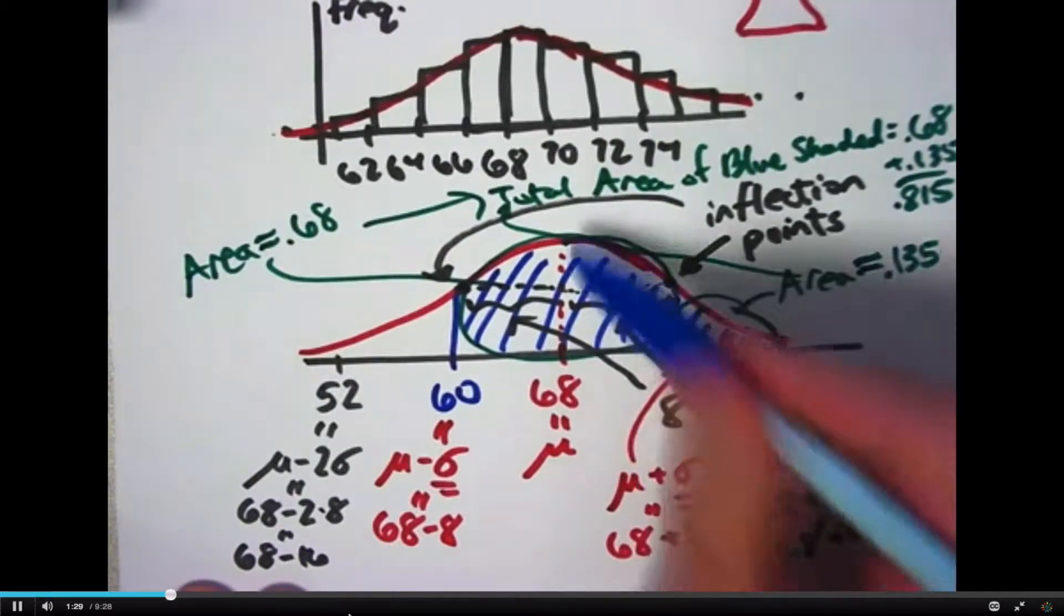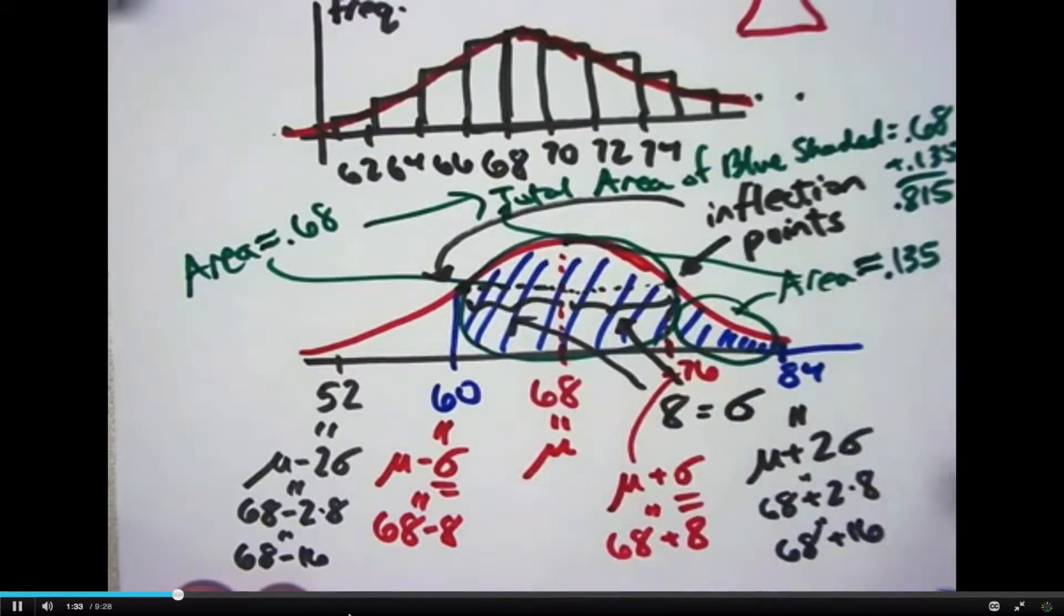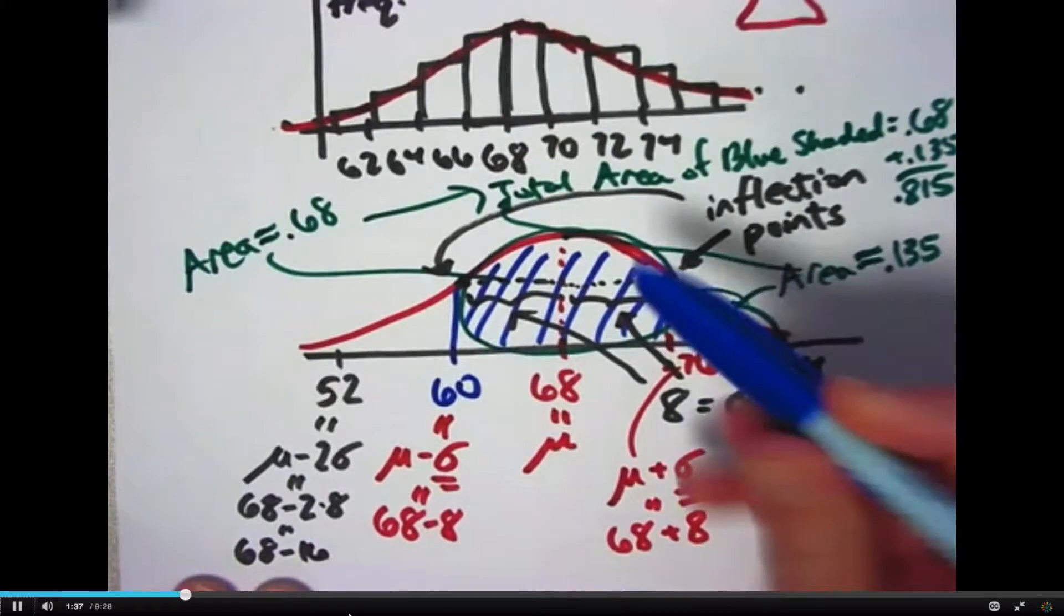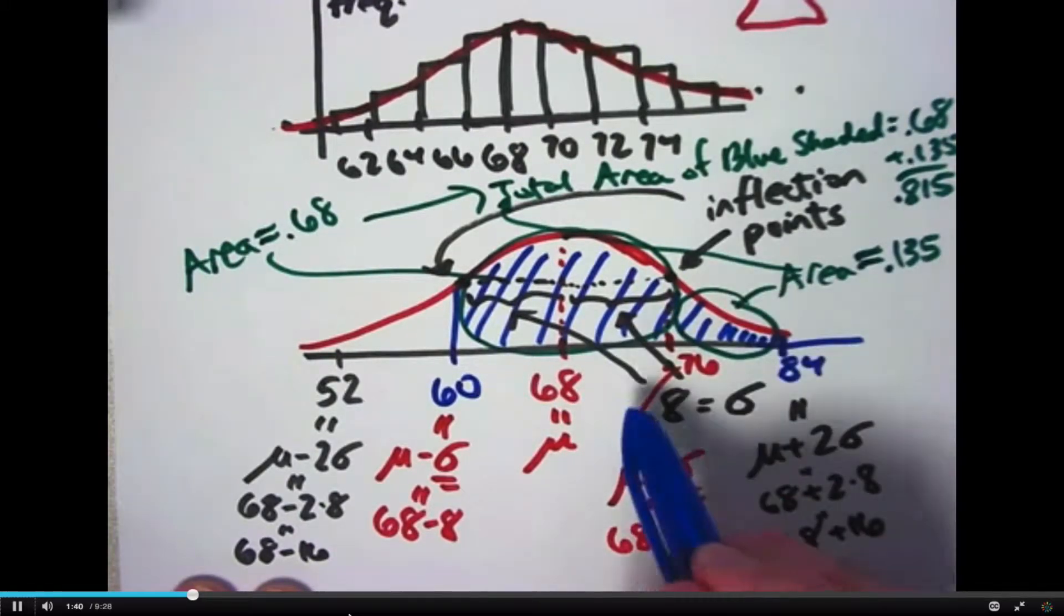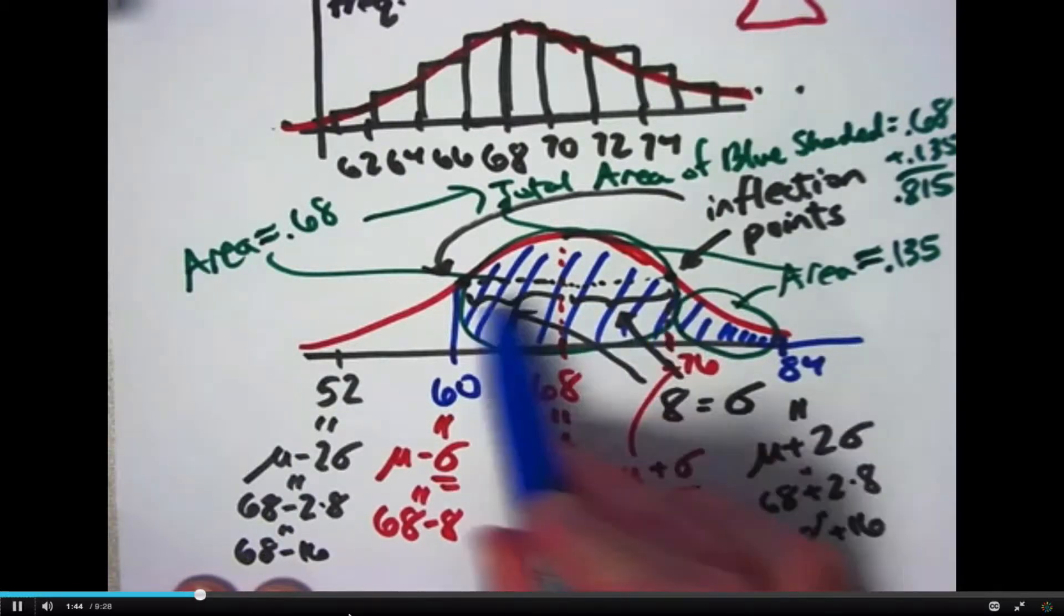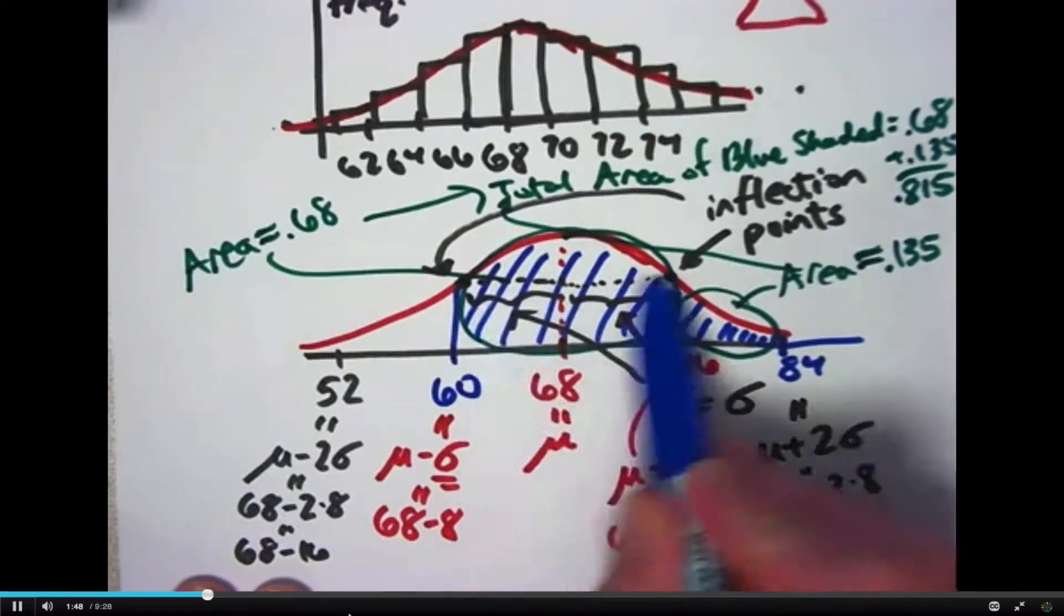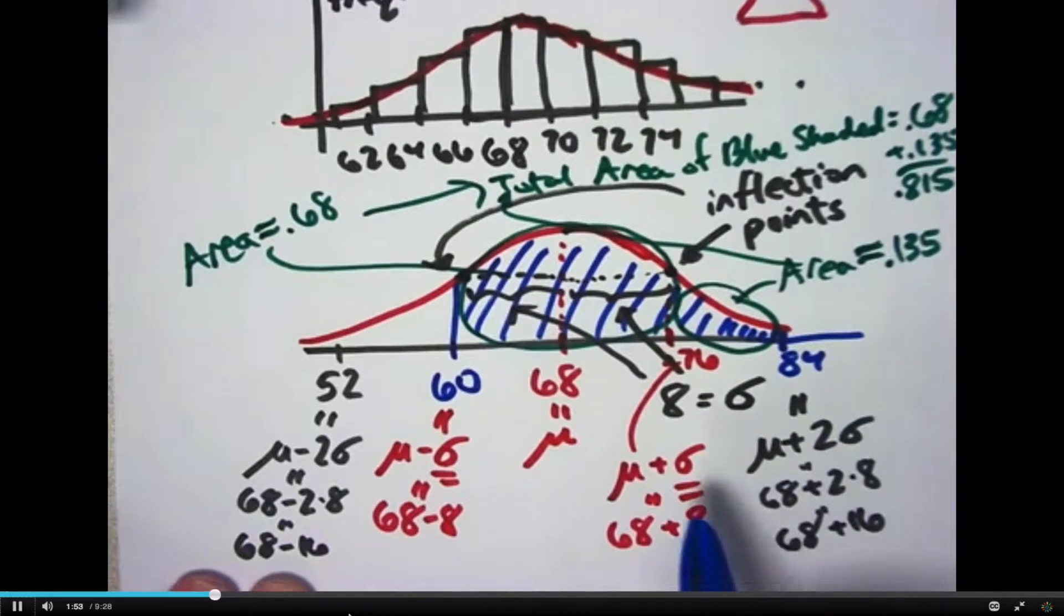The mean is the center, the peak of the curve. The curve is symmetric about that vertical line. Each side is a mirror image of the other side, which actually is important for solving the problem. The standard deviation is the horizontal distance between the mean and either inflection point up there where the concavity of the curve changes from concave up to concave down.